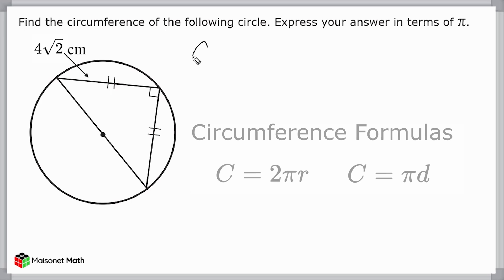So we know that to find the circumference of any circle, that is equal to either 2πr, or I actually like to use π times the diameter of the circle.